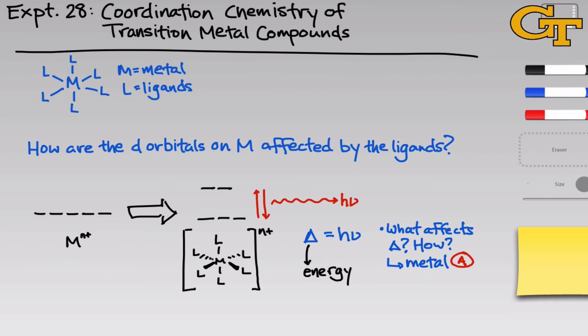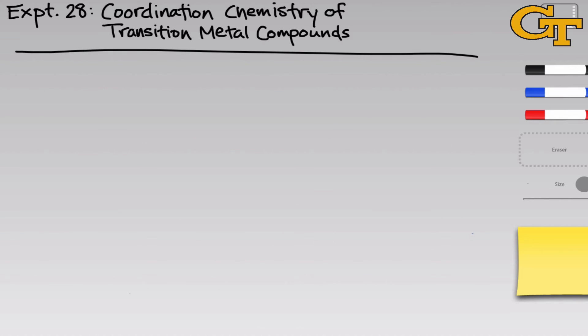We'll look at the influence of the metal in part A, and we'll look at the influence of the ligands in part B, keeping the metal constant. Now let's turn our attention to the specific parts of this experiment. In part A, we're going to be looking at the effect of the metal center on the color and the delta splitting of the complex, and so we're going to be using five different ions for this purpose.